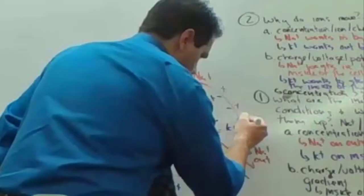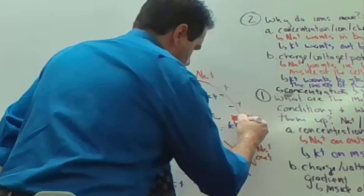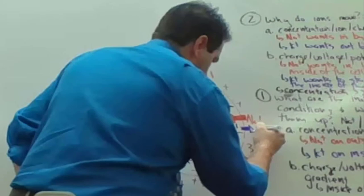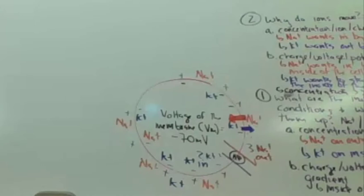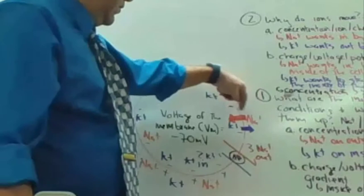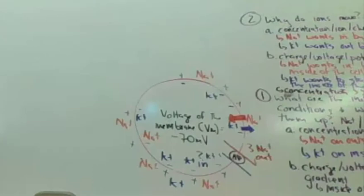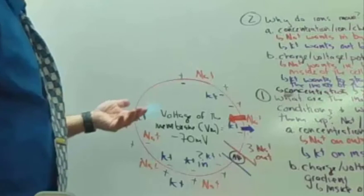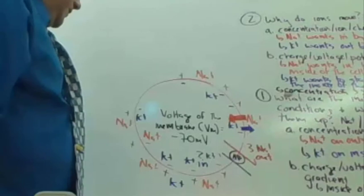If you have a channel that lets both sodium and potassium go at the same time, sodium would come in much more. Since sodium wants to come in more than potassium wants to leave, it does change the voltage. There's another situation in the heart where you open a potassium and calcium channel — those two want in and out at the same rate, so the voltage does not change.